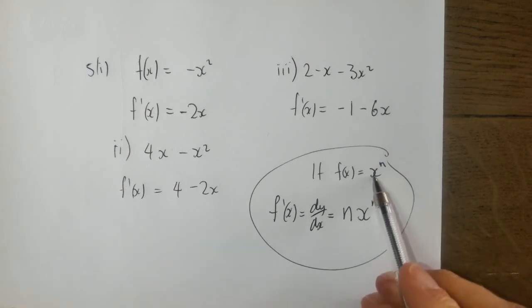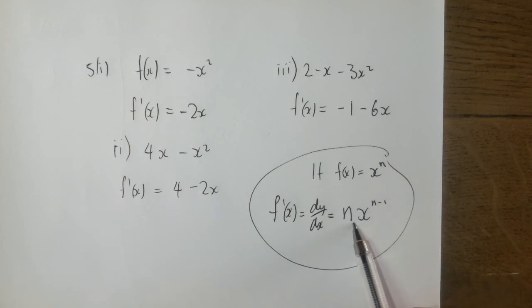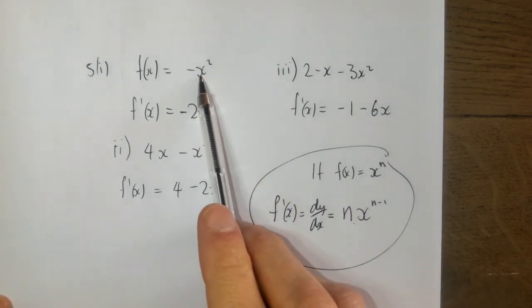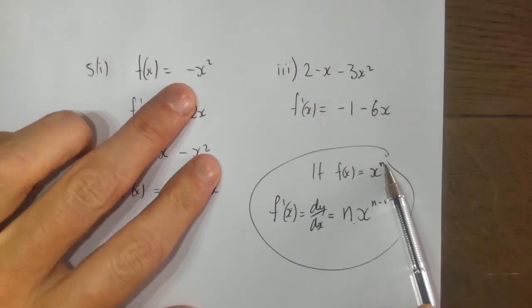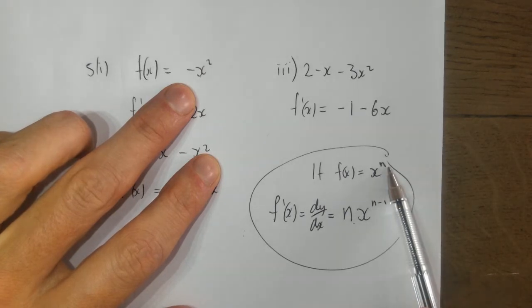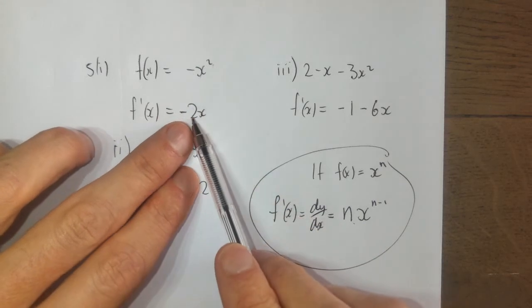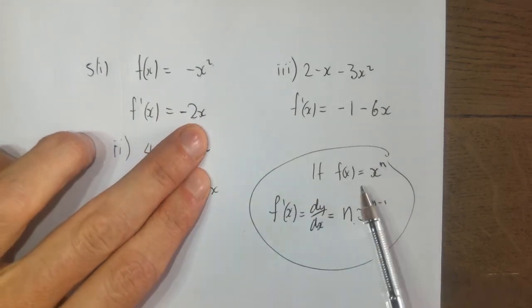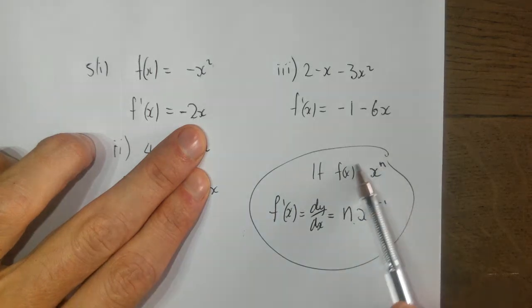The rule is: n times x to the n minus 1, if f of x equals x to the n. It all looks very posh but it's quite straightforward. If a function looks like x to the power of n, that's what it looks like when you differentiate it. Looking at minus x squared - the power is 2 - you basically bring this power down and take one away from it. There's already a minus 1, so minus 2 down, and I'm taking one away from 2 to leave x to the power of 1: so minus 2x.